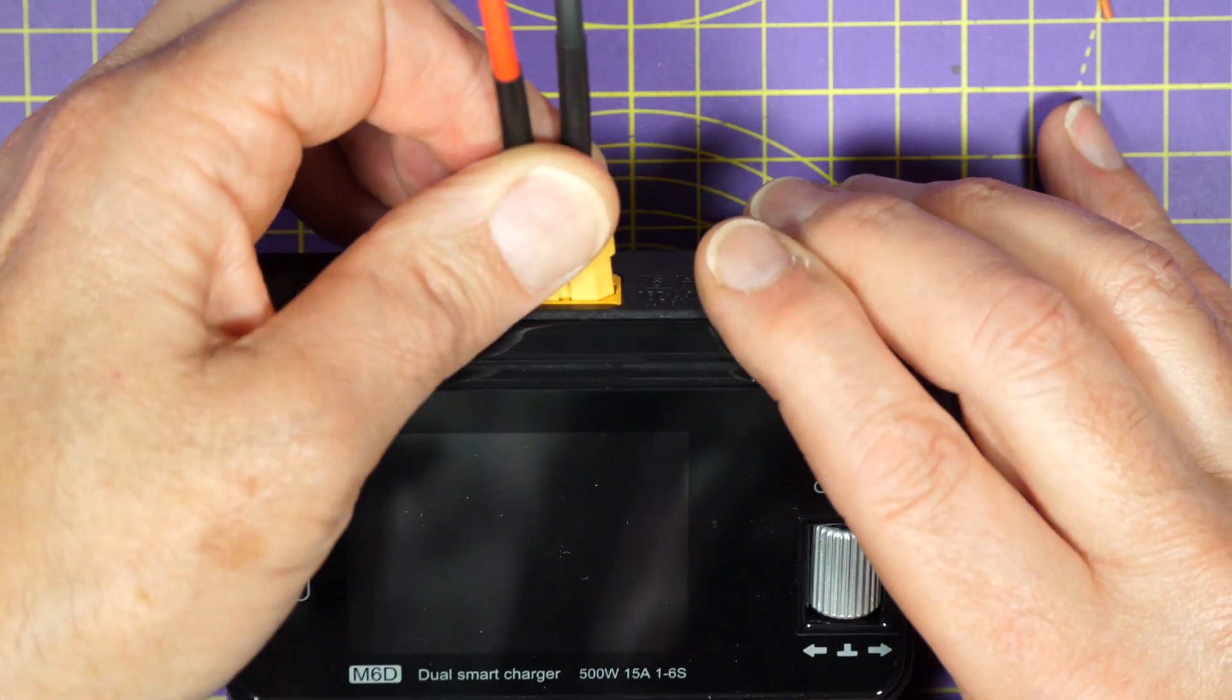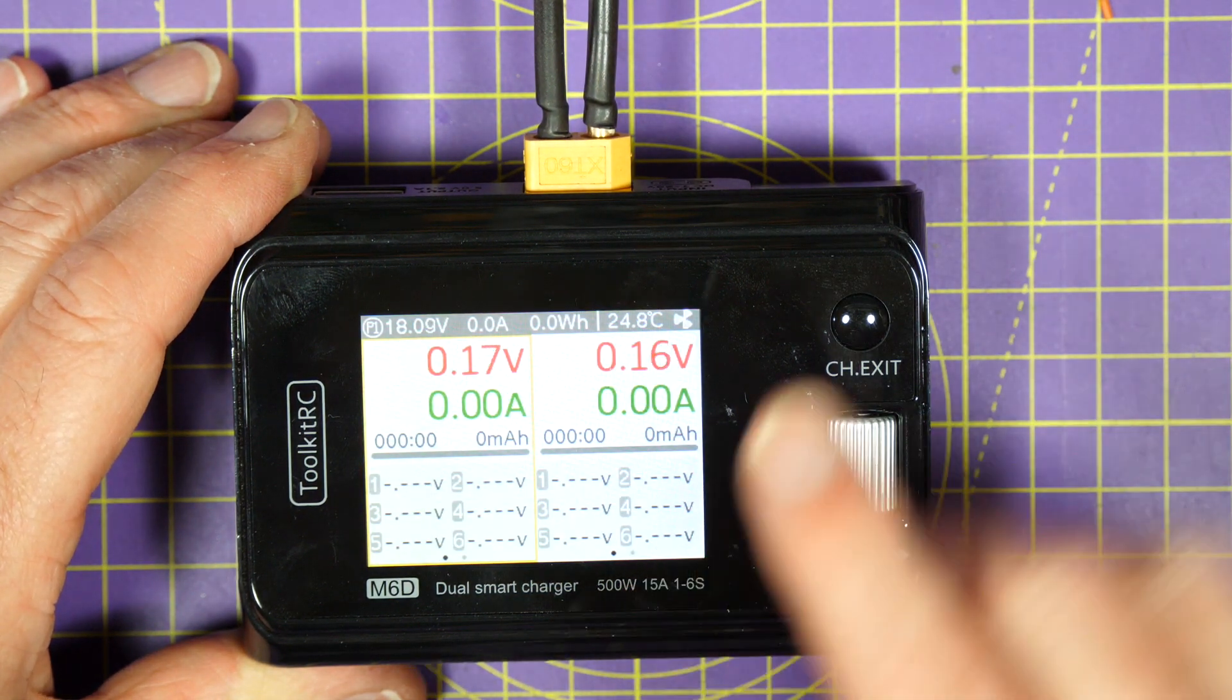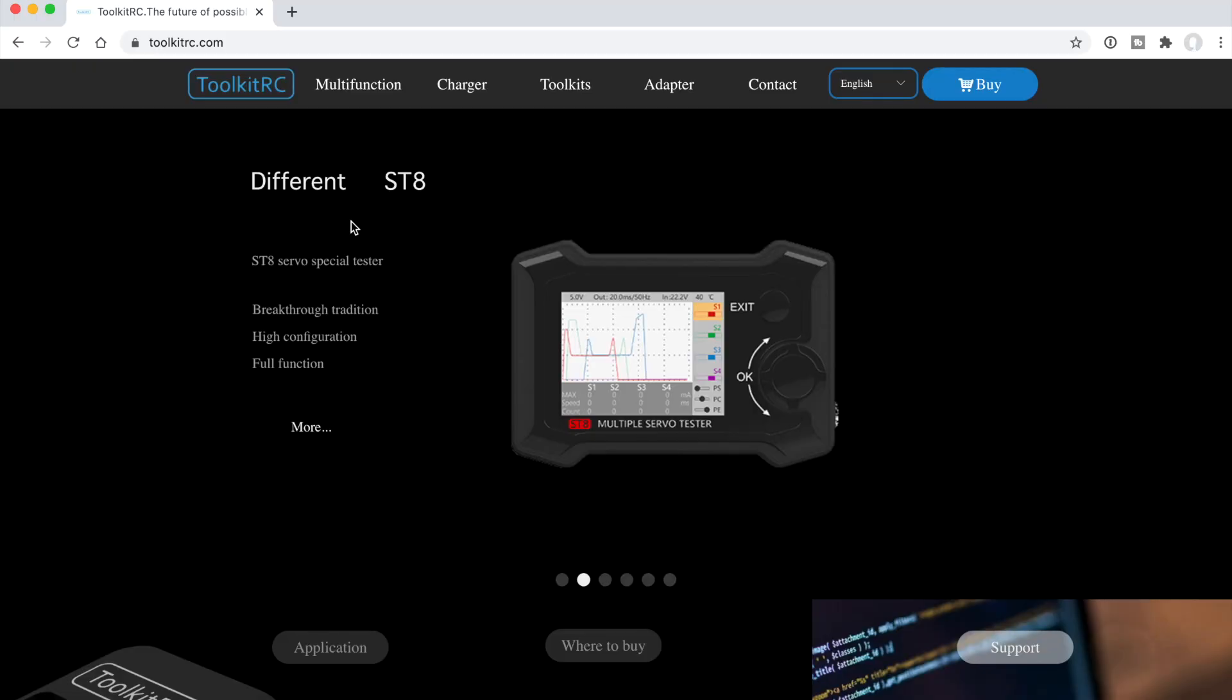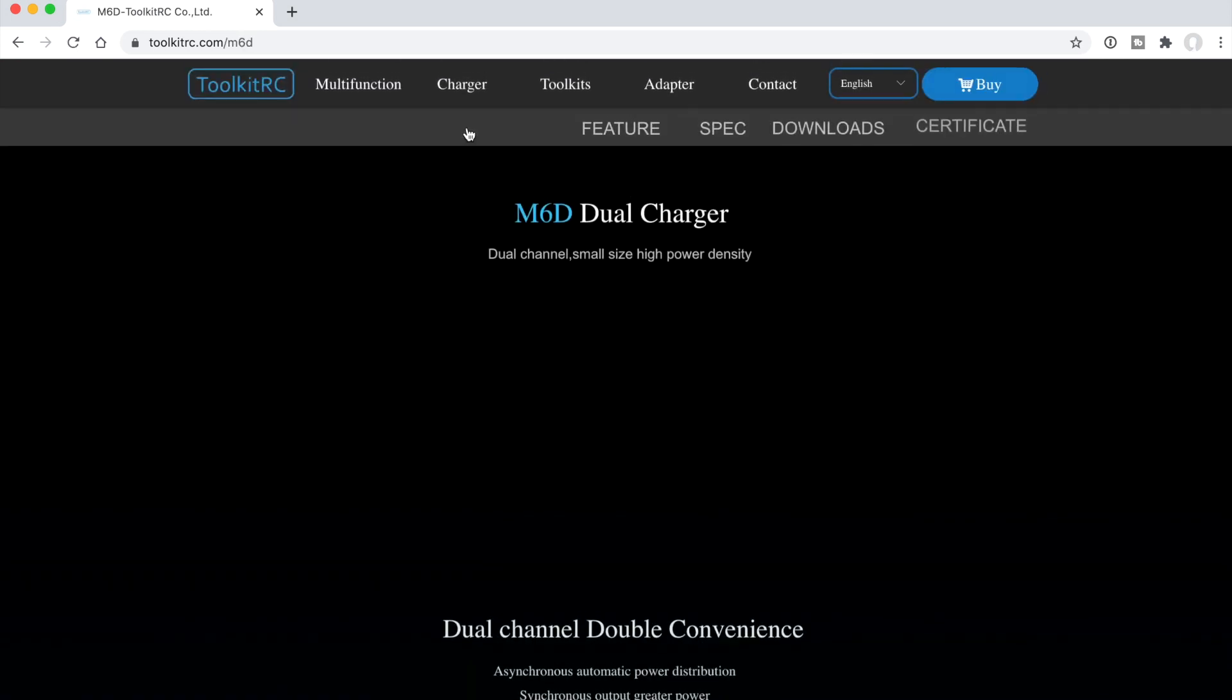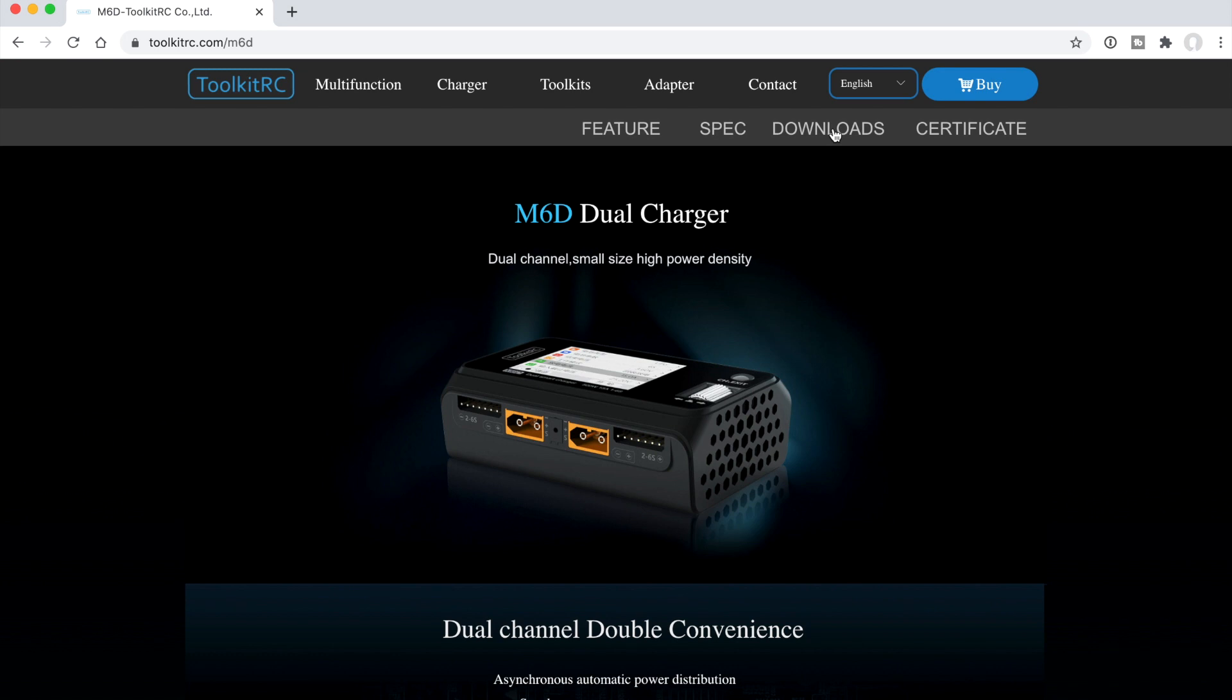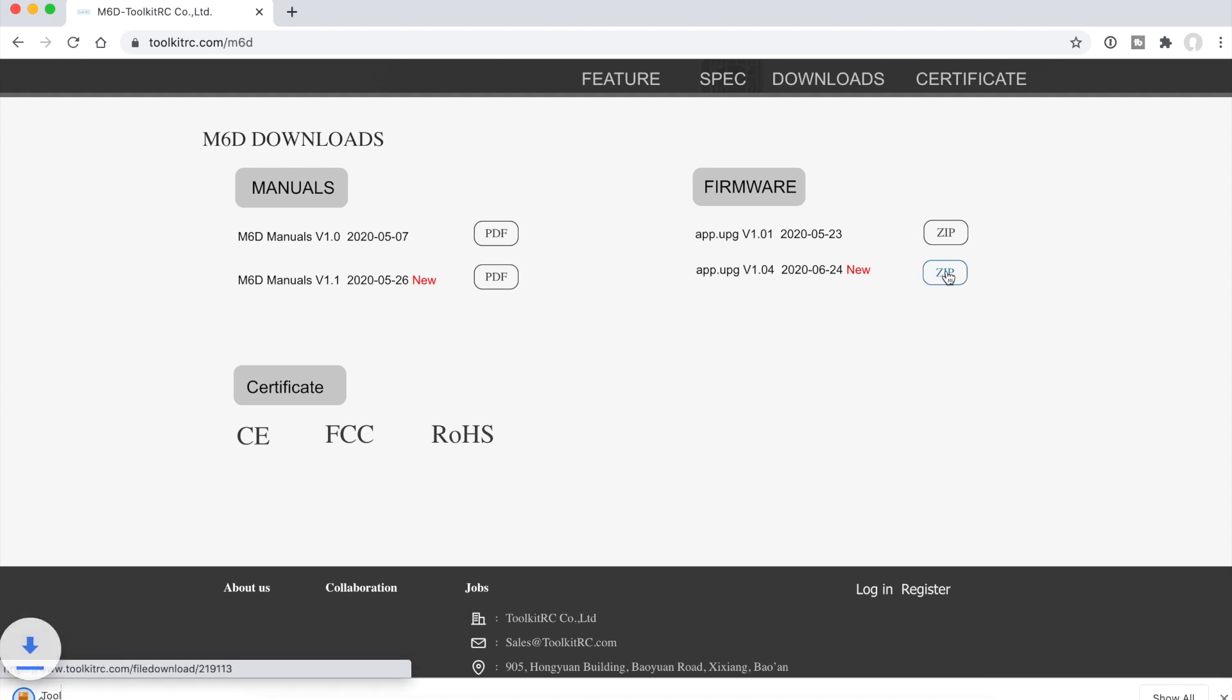I'm currently on version 1.02 of the firmware so I need to upgrade. Toolkit RC makes upgrading to new firmware really easy. If you head over to their website and on the M6D downloads page, there's a link to the latest 1.04 firmware. Download it and you'll need to unarchive it.